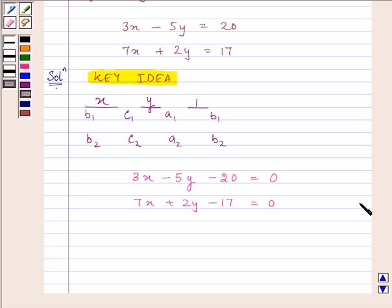All right. So B1, B2 are the coefficients of Y. That is, B1 will be minus 5 and B2 will be positive 2. C1, C2 are the constants which are given to us in the equation, that is, minus 20 and minus 17. And A1, A2 are the coefficients of X, that is, 3 and 7.